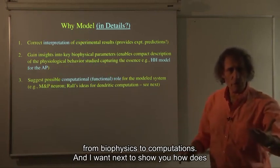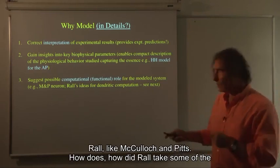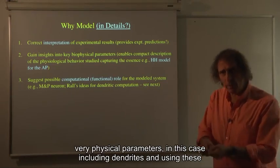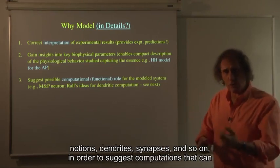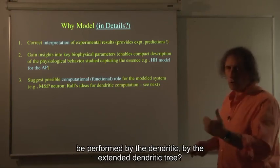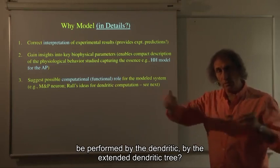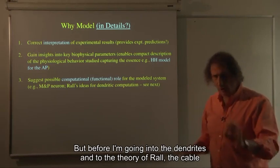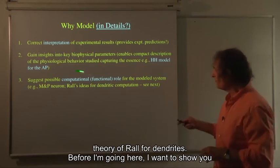And I want next to show you how does Rall, like McCulloch and Pitts, how did Rall take some of the biophysical parameters, in this case including dendrites, and using these notions, dendrites, synapses and so on, in order to suggest computations that can be performed by the dendritic, by the extended dendritic tree. But before I'm going into the dendrites and to the theory of Rall, the cable theory of Rall for dendrites, before I'm going here,